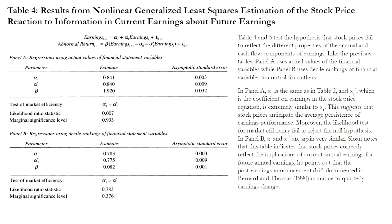Table 4 presents results from non-linear generalized least squares estimation of the stock price reaction to information in current earnings about future earnings. Along with Table 5, this tests the second hypothesis that stock prices fail to reflect the different properties of the accrual and cash flow components of earnings. The alpha-1 and alpha-1-star values are very similar, suggesting that stock prices anticipate the average persistence of earnings performance. Sloan notes that this table indicates stock prices correctly reflect the implications of current annual earnings for future annual earnings, and that the post-earnings announcement drift documented by Bernard and Thomas 1989 is unique to quarterly earnings changes.